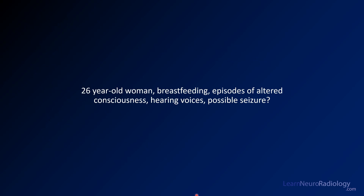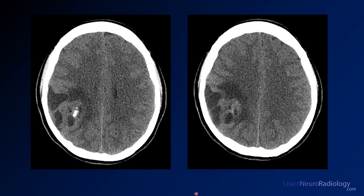Finally, we have a 26-year-old woman who just had a child and is now having altered consciousness and possibly seizures. On CT, there's a mass in the right cerebral hemisphere with a lot of surrounding edema, some central calcification, and a relatively solid-looking component. The margins are pretty well-defined with a little bit of mass effect, but it's not dramatic.